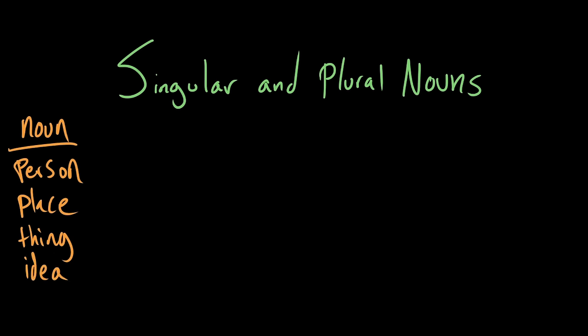And in English we can figure out just by looking at a noun whether or not there is one of something, whether it's singular, or whether or not there is more than one of something. And there's an easy way to tell the difference between singular and plural.